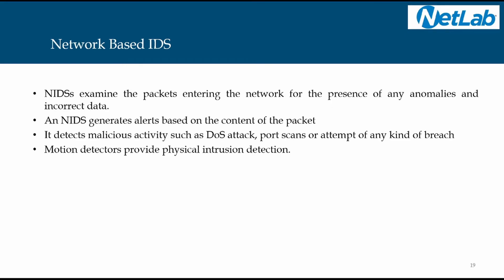Network-based IDS examines packets entering the network for the presence of any anomalies and incorrect data. It operates at the network level, not the host level. An NIDS generates alerts based on the content of the packet. For example, if a packet comes in on port 80 — which should be HTTP traffic — but the content is malicious JavaScript rather than an HTTP request or response, the network-based IDS can stop it. It detects malicious activity such as DOS attacks, scans, or any kind of breach attempt. Motion detectors provide physical intrusion detection, which will be covered in the physical security chapter.